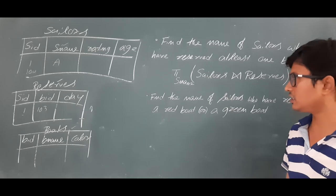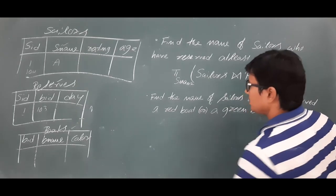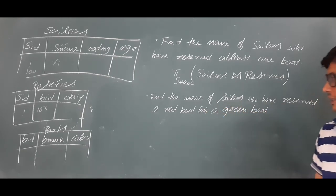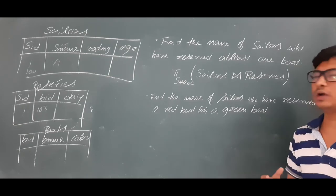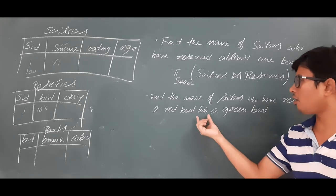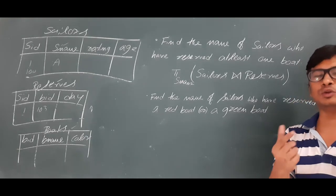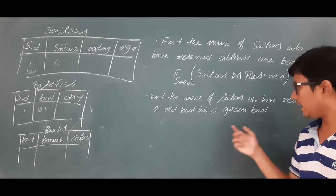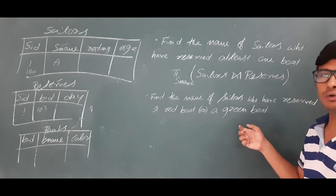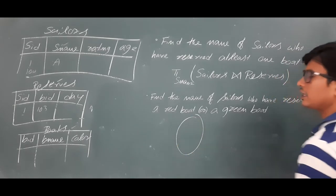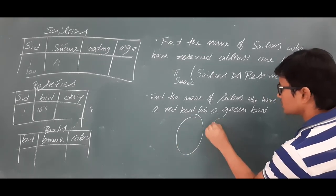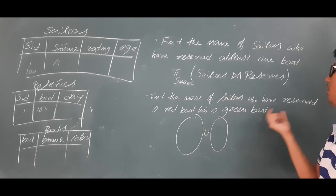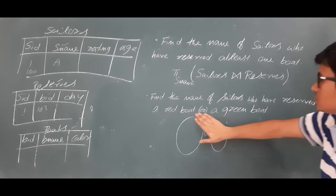Now query number two: find the name of sailors who have reserved a red boat or a green boat. We need to identify sailors who reserved a red boat or a green boat. The operator to apply is set union — first identify sailors who reserved a red boat, then identify sailors who reserved a green boat, then apply union to get all sailors who reserved either a red or green boat.